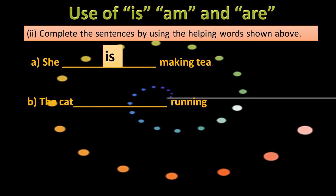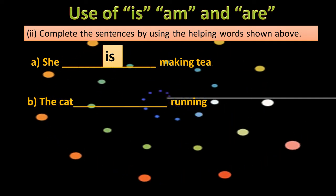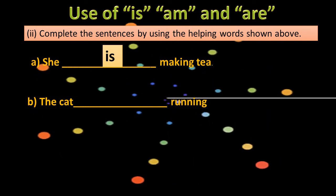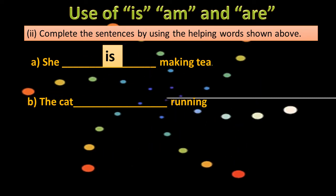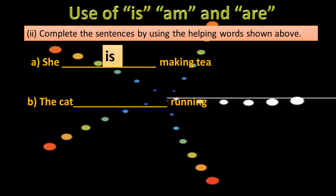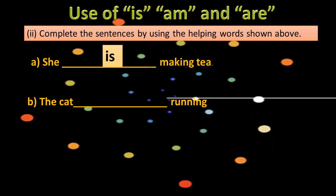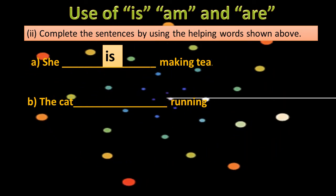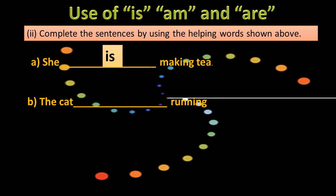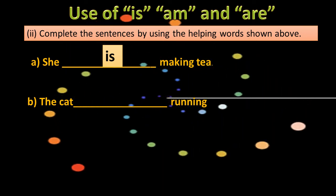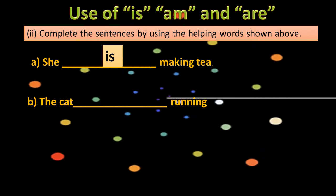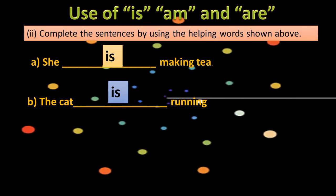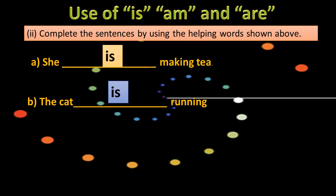Next sentence: The cat dash running. Yahan kitne persons ke bare mein baat ho rahi hai? Yahan pe ek animal ke bare mein baat ho rahi hai. Lekin agar kisi animal ke bare mein baat ho rahi hai to us ki bhi quantity ko hum dekhte hain ke kya wo singular hai ya plural hai. Cat ek hai, yahan 'cats' nahi likha, to yahan 'is' aaye ga. The cat is running.